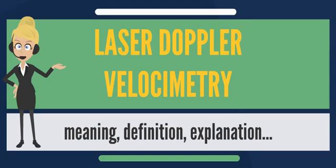Similar arrangements using optical heterodyne are also used in laser Doppler sensors for measuring the linear velocity of solids and for measuring vibrations of surfaces. The latter sensor is usually called a laser Doppler vibrometer, also abbreviated LDV.